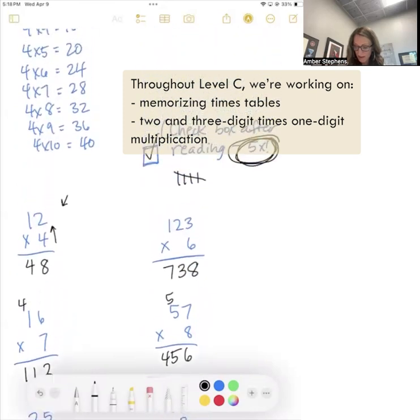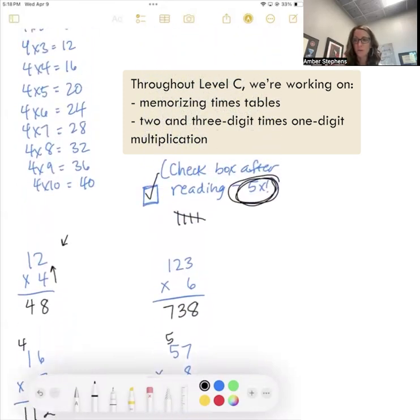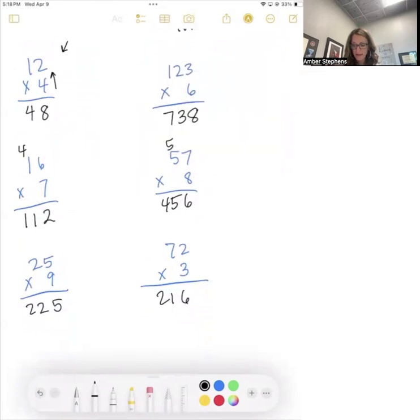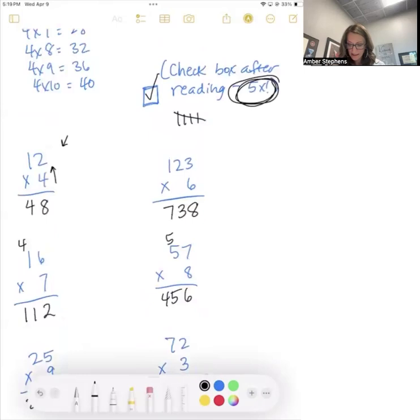So again, we're working on memorizing the times tables and then we're doing two, two and three digit times one digit multiplication. So this is short multiplication. We don't have any like two rows that we're adding, that comes in level D where long multiplication is. So thank you guys for watching.